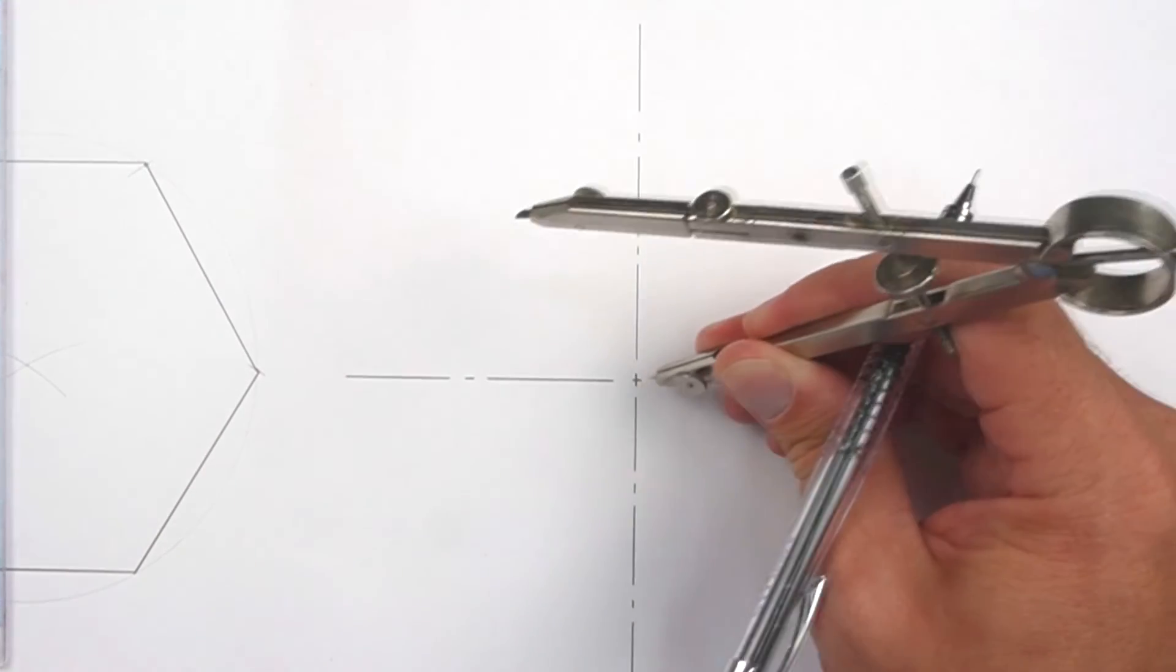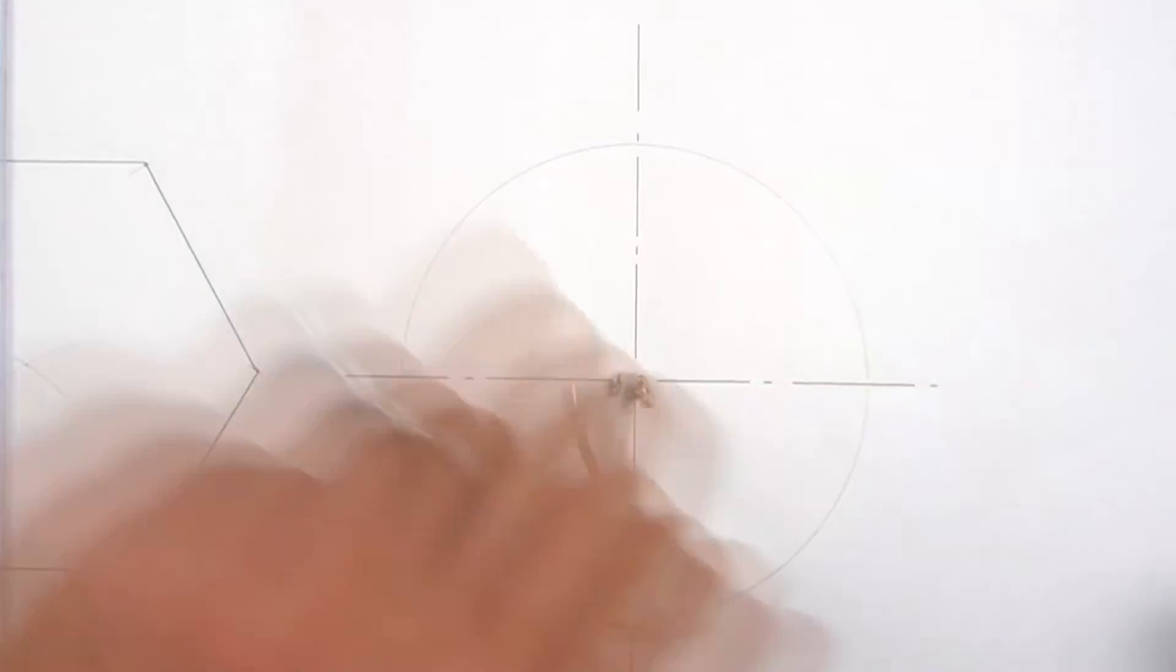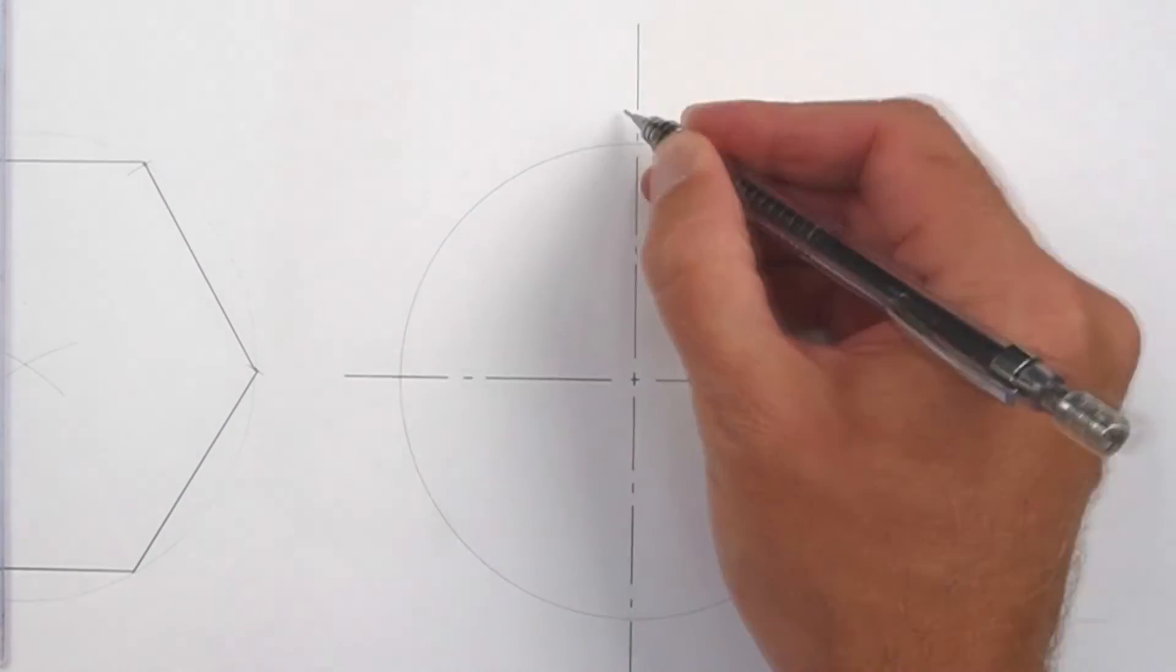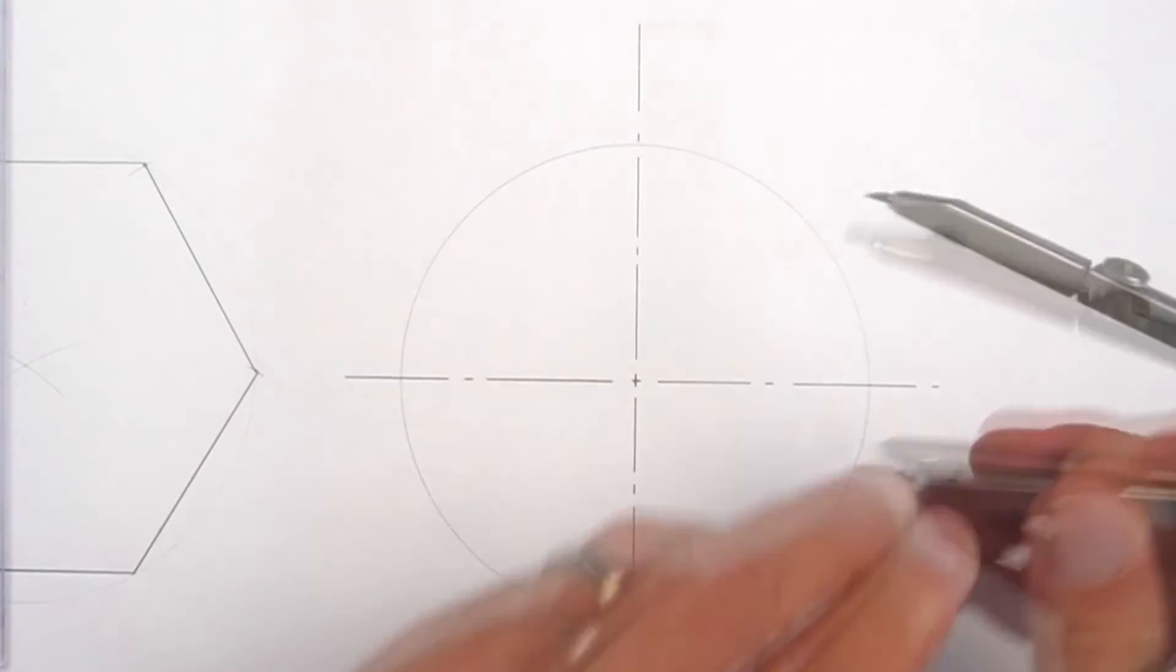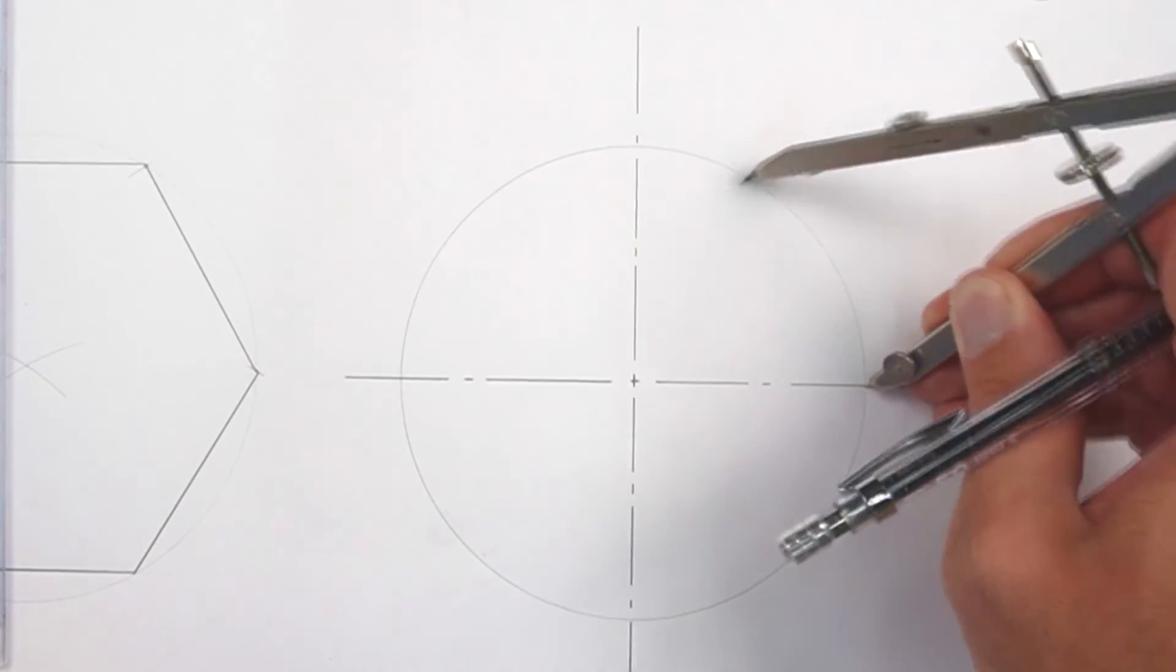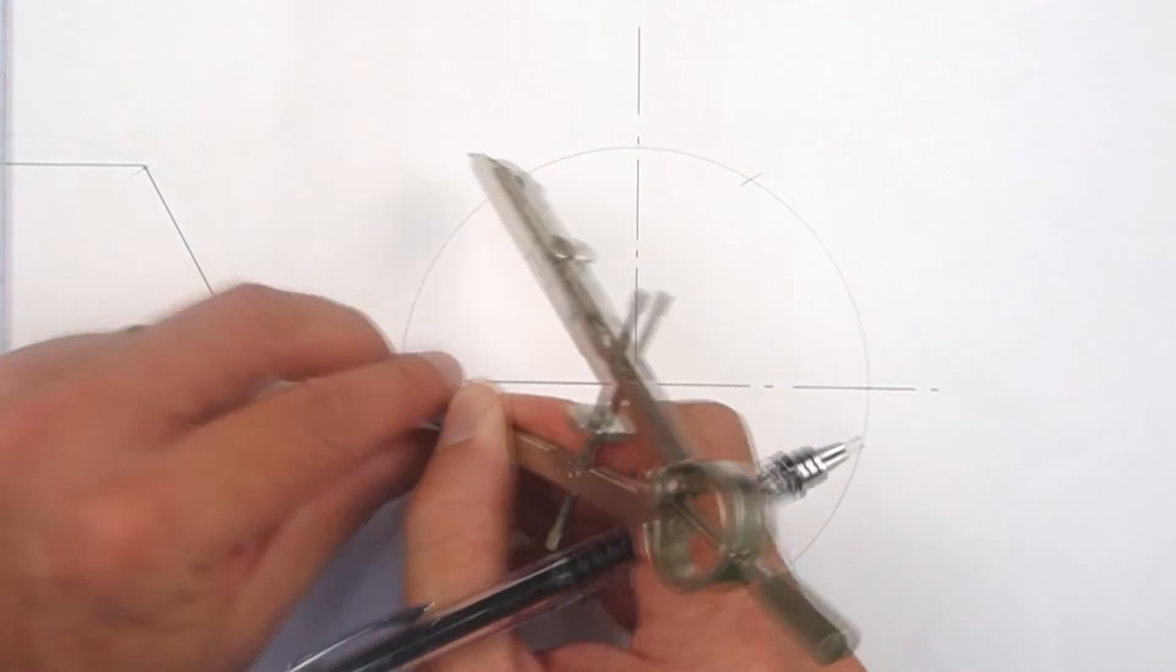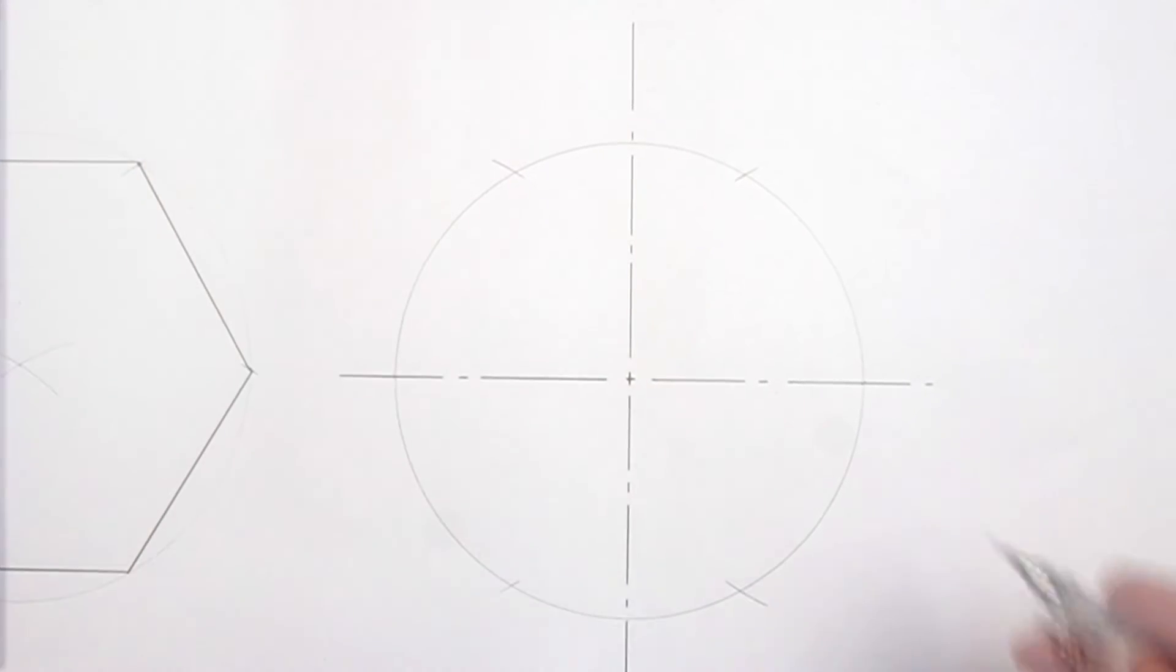We're going to start here in the middle and draw our arc. Now choose a side. Depending on the rotation of this hexagon, you're going to use that same radius and mark off on that circumference your six points used for this construction. So you've got one, two, three, four, five, and six.